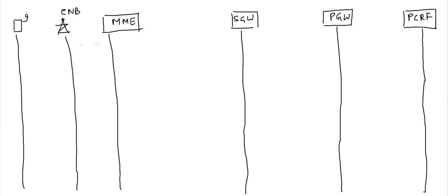Our location update has already been completed. The MME received the attach request, performed the location update, and now we are going to see the next steps. Here you can see I have drawn UE, eNodeB, MME, SGW, PGW, and PCRF — these are all components of the LTE architecture. PGW is the PDN Gateway, which provides connectivity towards the PDN. It is also connected to MME, through which location update and authentication have been completed.